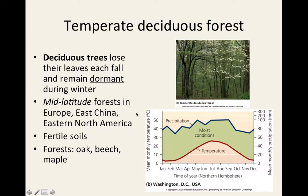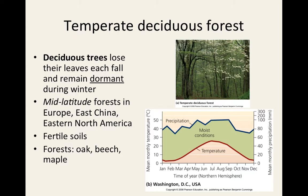The first terrestrial biome is the temperate deciduous forest, predominantly located along the eastern seaboard of the United States. Deciduous trees — such as oak, beech, and maple — lose their leaves and become dormant during winter. These mid-latitude forests are also found in Europe, eastern China, and northeastern North America, and they have very rich and fertile soils.